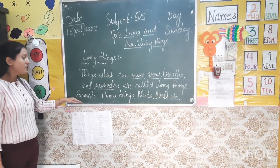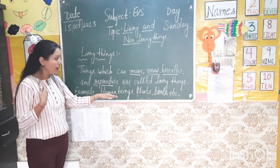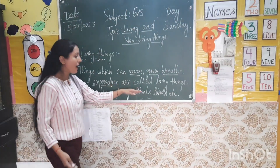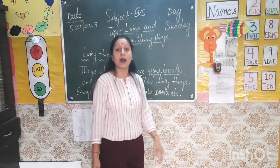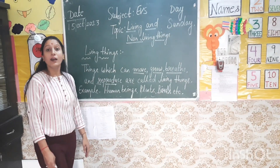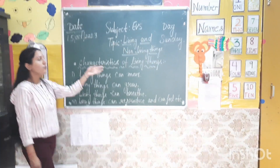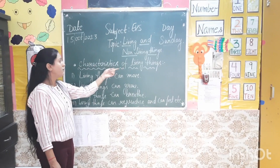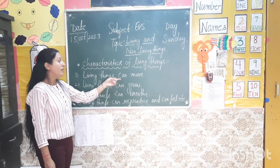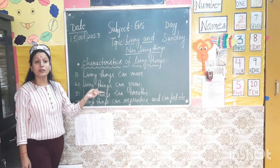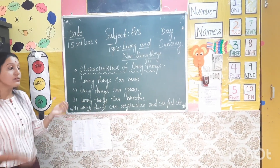And the examples of living things are human beings, plants, birds, and animals. These are the examples of living things. Now the characteristics of living things. The first characteristic is living things can move. What is the meaning of this sentence? Living things can move.